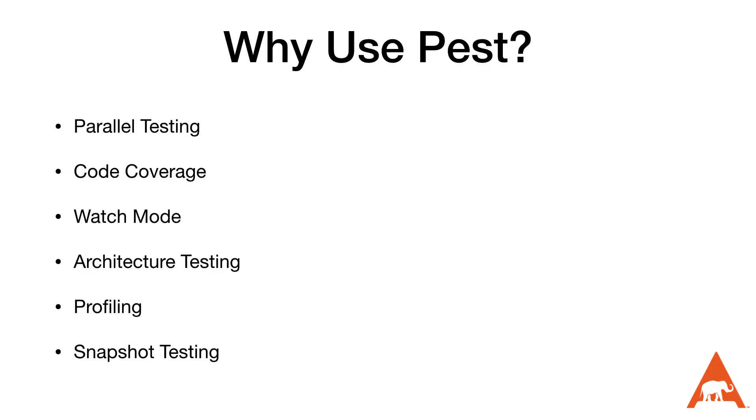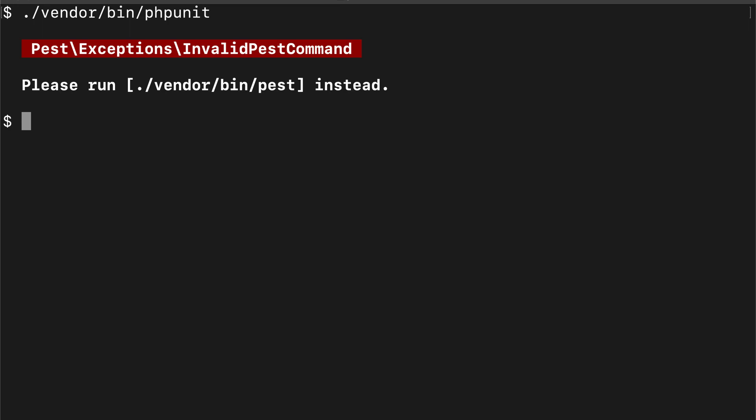PEST also includes some beneficial additional features, such as parallel testing, coverage checks, watch mode, architectural testing, native profiling tools, and the snapshot testing tool. Because it's built on top of PHPUnit, we don't need to rewrite all of our PHPUnit tests for PEST immediately, and can instead use PEST to run our existing PHPUnit-based tests automatically. There are also migration tools that will allow us to migrate our tests, though I haven't tried any of them so I can't vouch for the results. We do need to replace all of our calls to the PHPUnit command line with the PEST command, as PEST prevents PHPUnit from running.